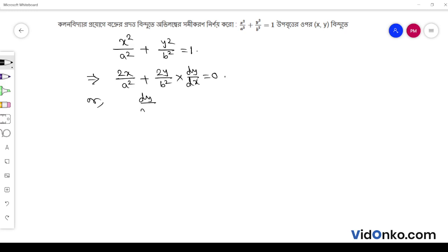So dy dx is equal to minus x by a squared into b squared by y. That is minus b squared x by a squared y. Now if we're talking about this, the next step we will determine.